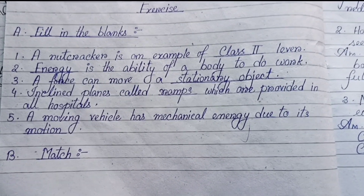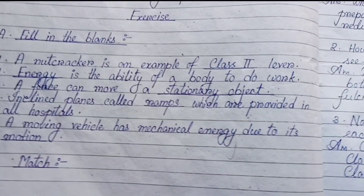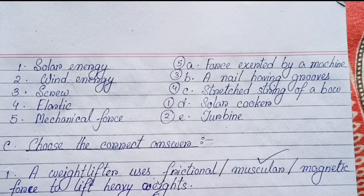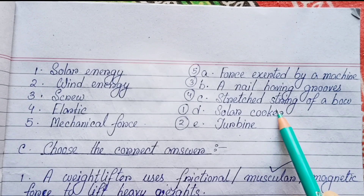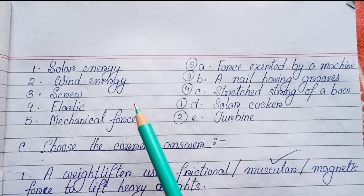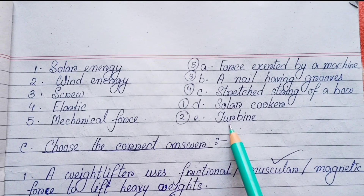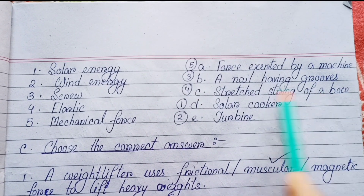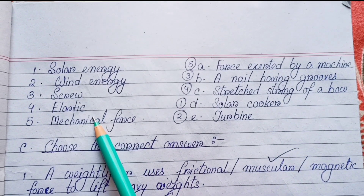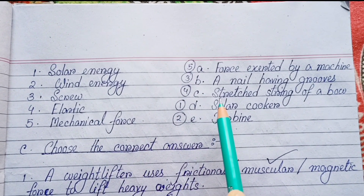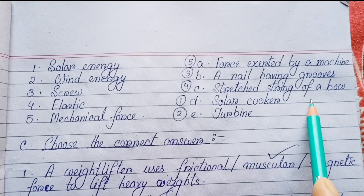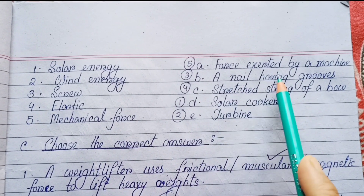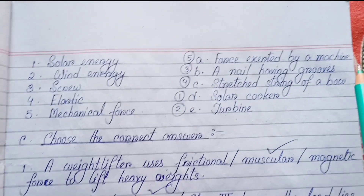Match the following. Number one: Solar energy matched with solar cooker. Number two: Wind energy matched with turbine. Number three: Screw matched with a nail having grooves. Number four: Elastic matched with stretched string of a bow. Number five: Mechanical force matched with force exerted by a machine.